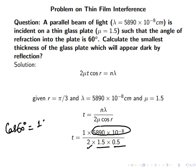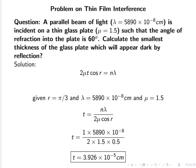Cos r is basically cos 60°, which is 1/2, so that's why here 0.5. If we calculate all these values, then we will get the final answer, that is 3.926 × 10⁻⁵ cm. So this is our solution.